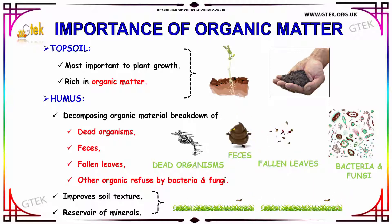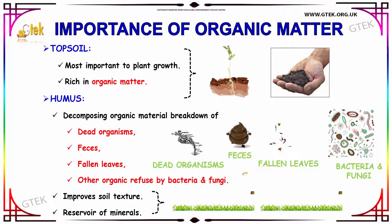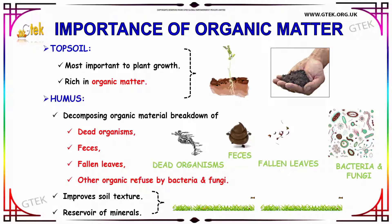Humus is the breakdown of dead organic material — fallen leaves and other organic refuse — by bacteria and fungi. You can see it over here. This humus improves the soil texture, and it is used as a reservoir of minerals.